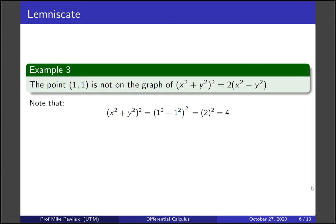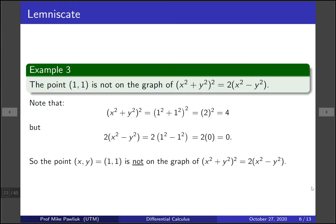Well the left hand side if we plug in the x and y values outputs four. What does the right hand do? The right hand side if you plug in the values will output zero. So because four is not the same as zero, this point won't be on the graph of the lemniscate.